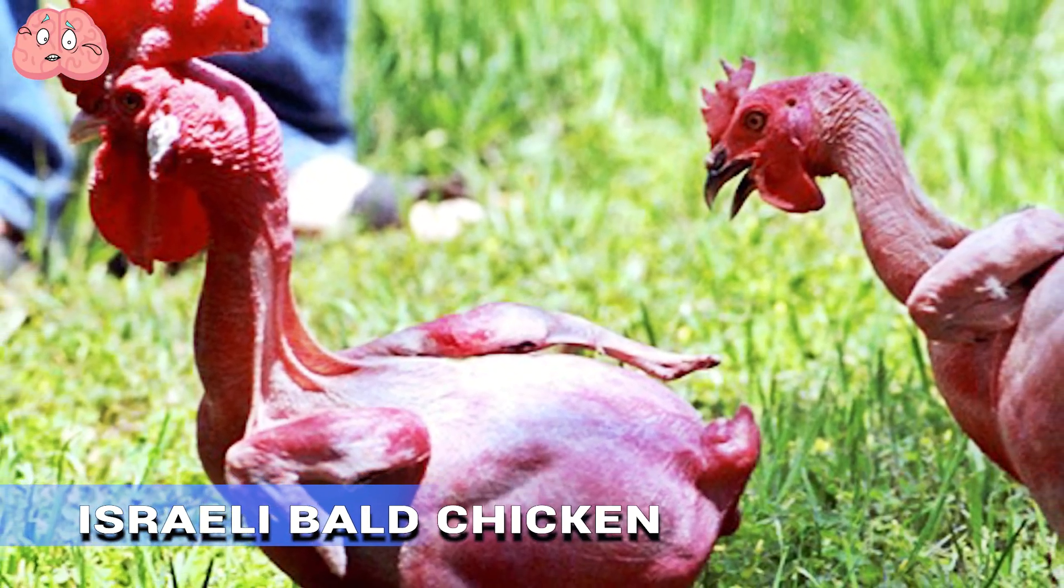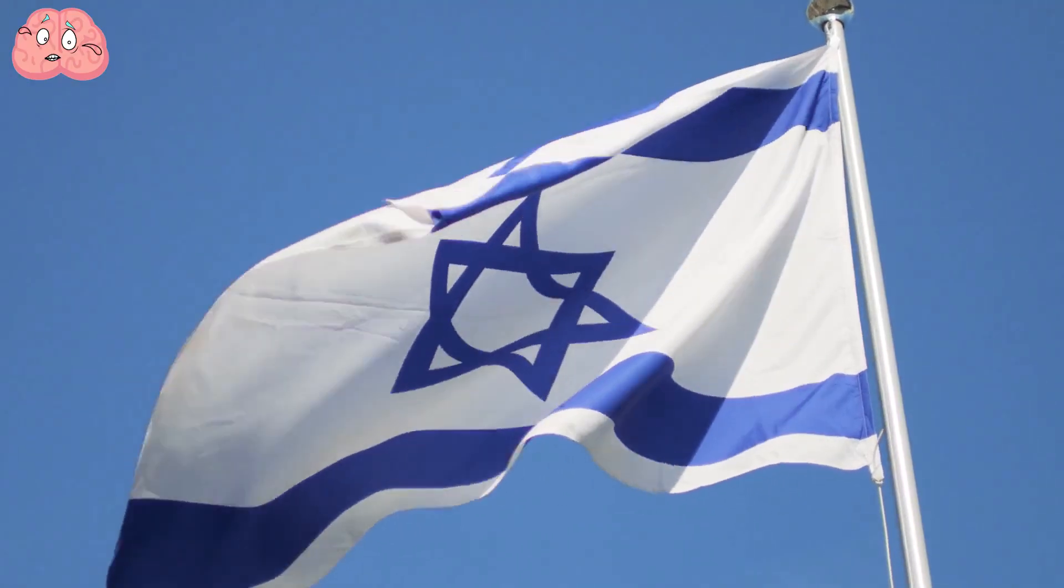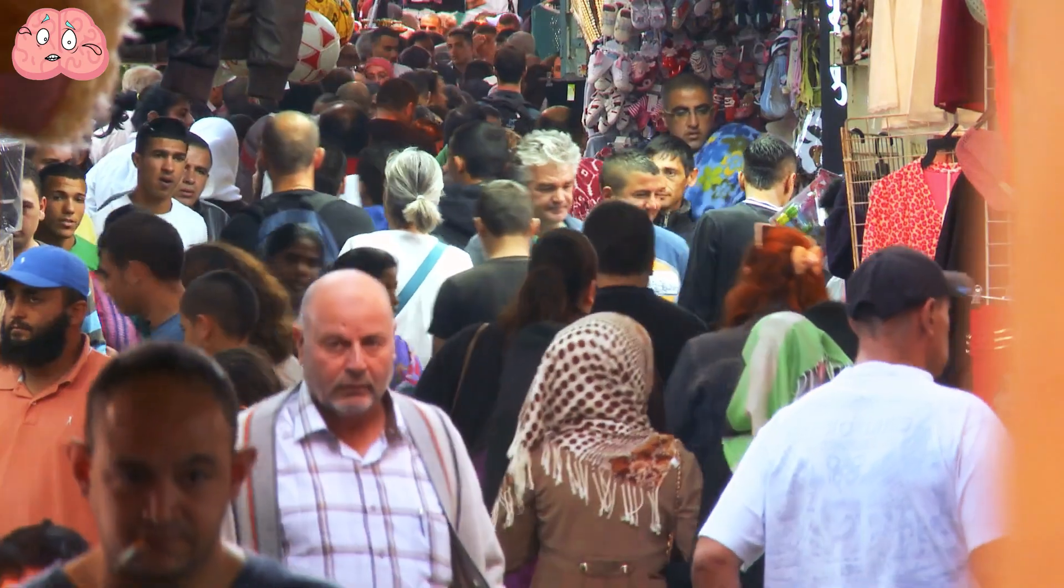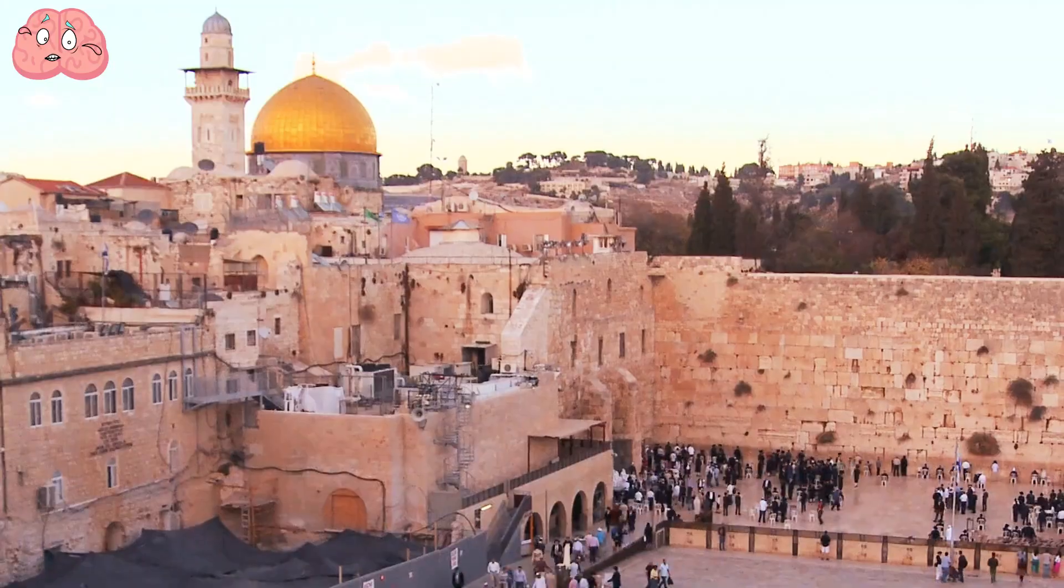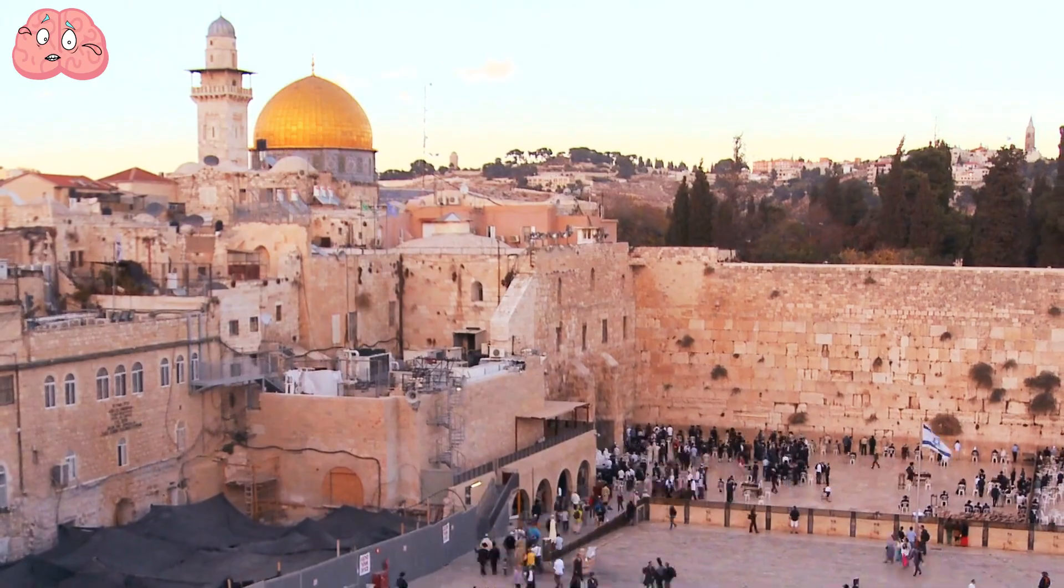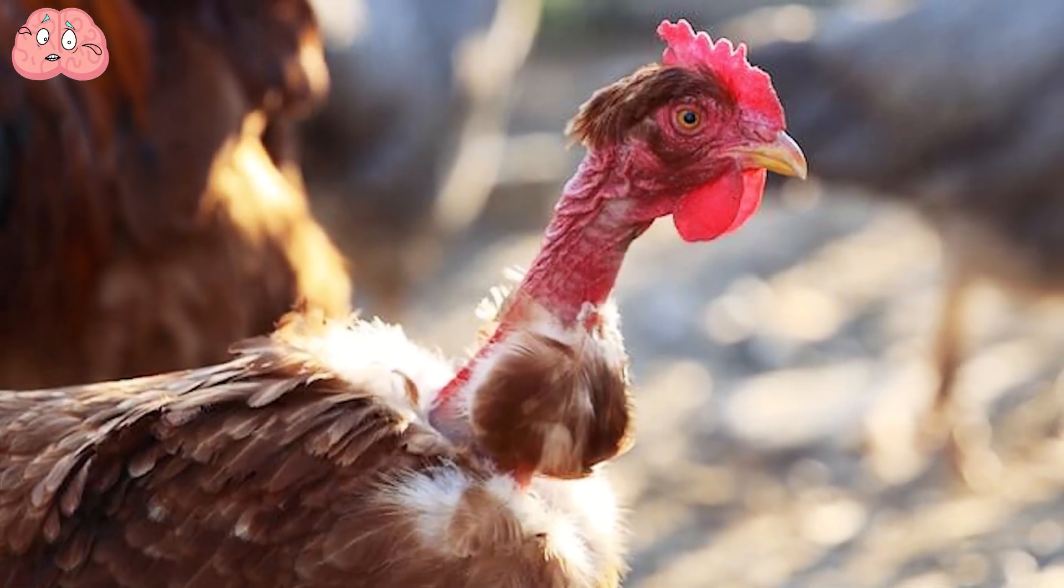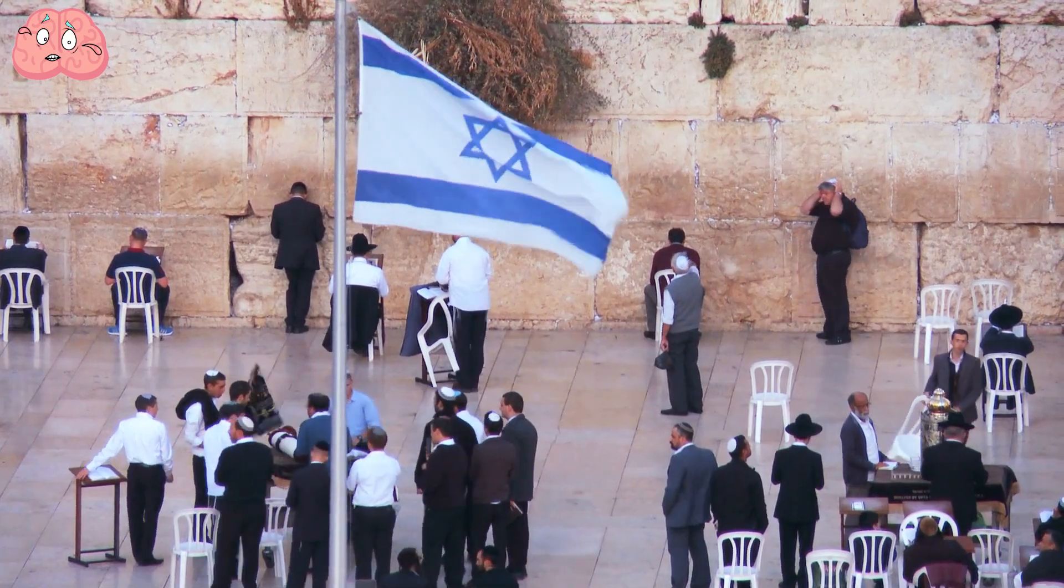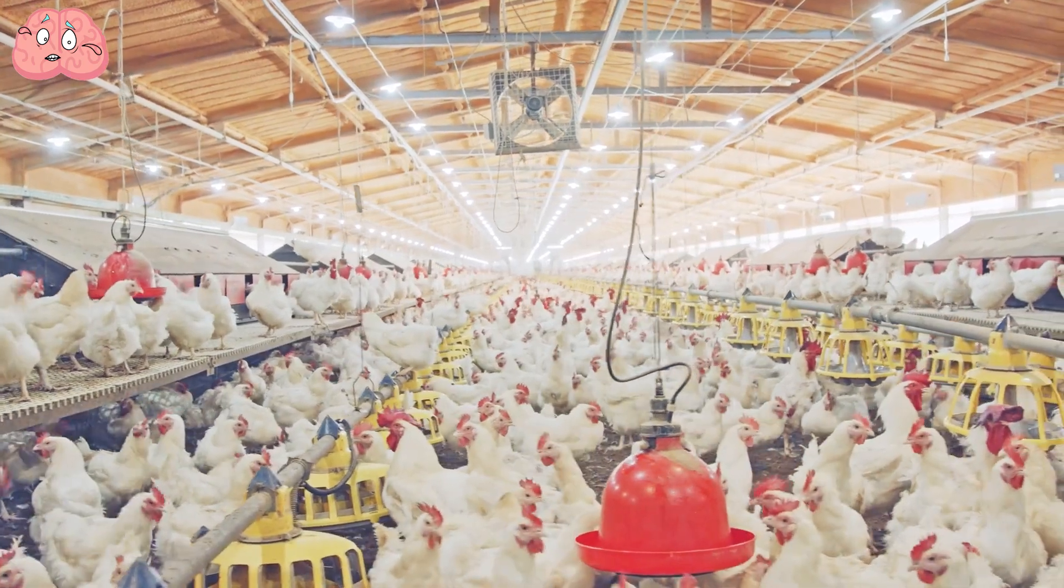Israeli Bald Chicken: About 10 years ago, a group of Israeli geneticists, led by Avigdor Cohen, completed 25 years of work on creating an unprecedented breed of chicken. They achieved this by crossing broilers and naked-necked chickens, resulting in birds completely devoid of plumage. This unique project was driven by Israel's hot climate, where many feathered chickens struggle, get sick, and sometimes even die from overheating.